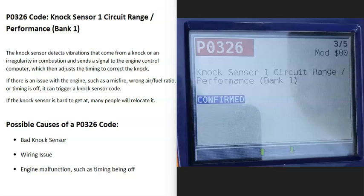Today I'm talking about a P0326 code, what it is and how you go about fixing it. A P0326 code is knock sensor one circuit range performance, bank one.